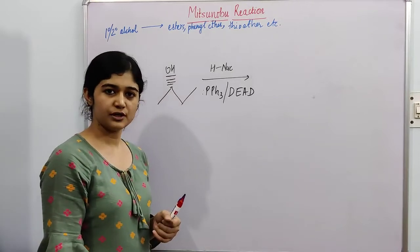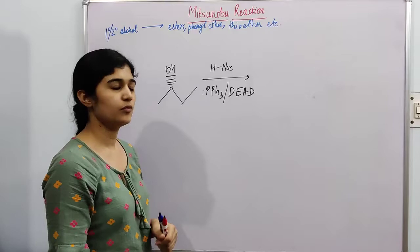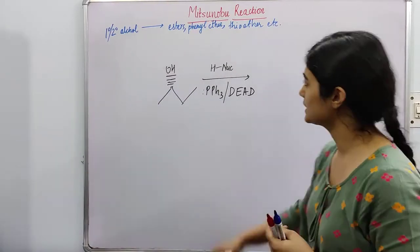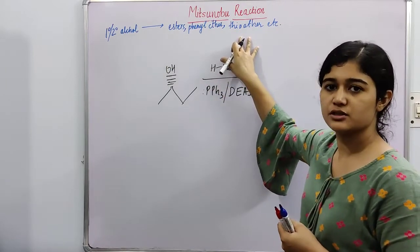We are going to study a Mitsunobu reaction. What happens in this reaction? Primary or secondary alcohol gets converted into various other functional groups.